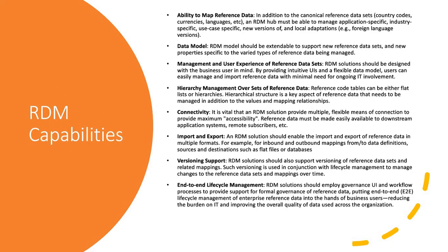The first key capability of an RDM solution is the ability to map reference data. Once you have defined your canonical reference data sets at the enterprise level, the RDM hub should manage the mappings between different systems and that enterprise-level reference data. For example, for gender codes M, F, your CRM might represent M as M01 and your ERP as M001 — this mapping from both systems to the enterprise-level gender M code must be present in your reference data to manage integration between systems.